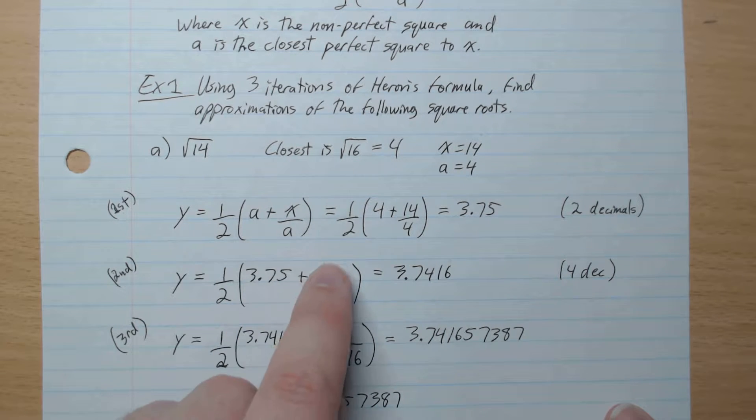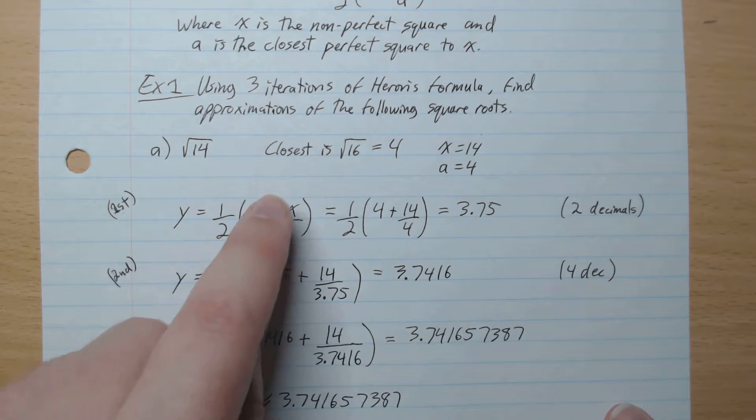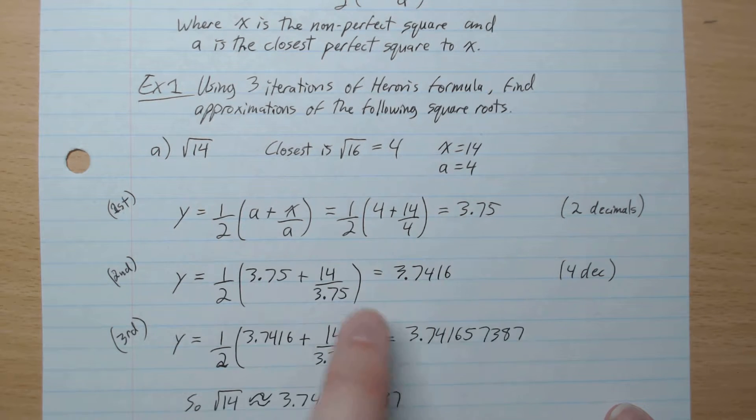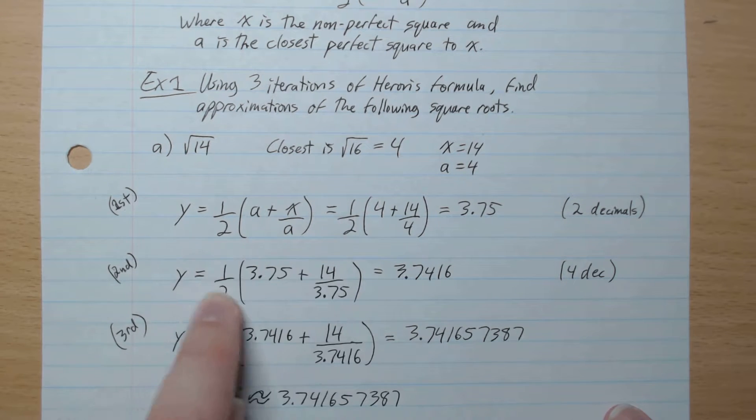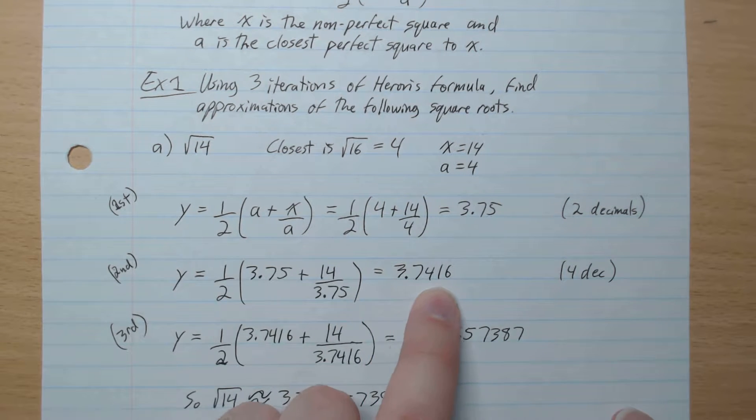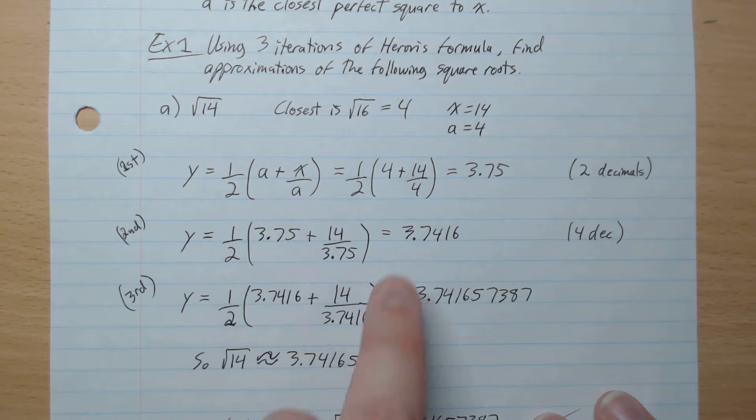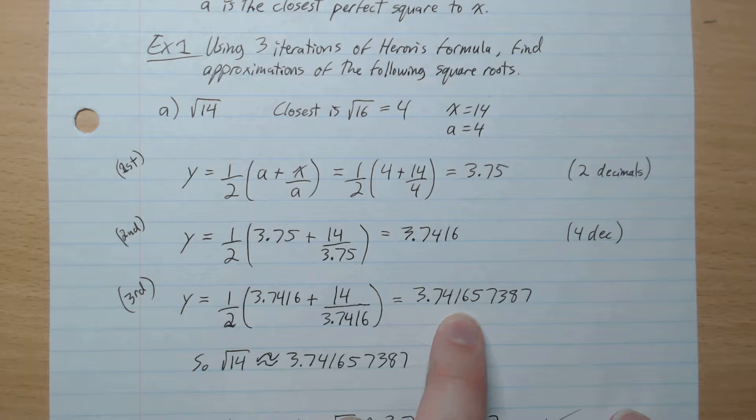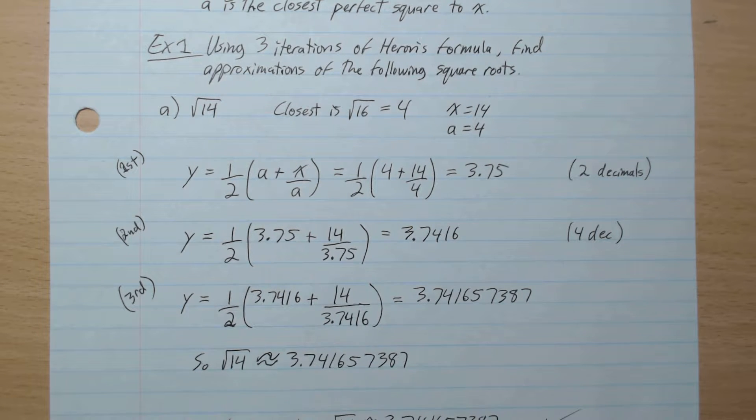Now we're going to do this 3.75 again in Heron's formula. So we have 3.75 plus 14, which stays the same, right? x is still the same. But our a value is now 3.75. So we punch that in our calculator, and we get 3.7416. If there's more decimals, just start with 4. And then now we're going to do a third iteration, where we take this value, plug it in again, and we get 3.741657387. And so that's what it's approximately. And if you check on your calculator, root 14, it matches exactly.